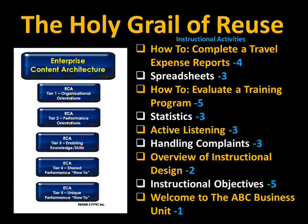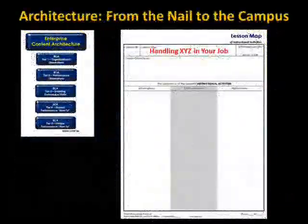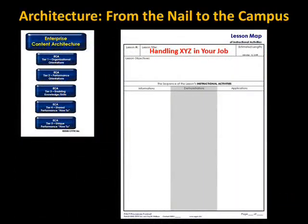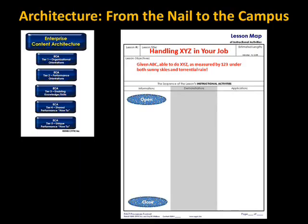How that would play out in the lesson map for handling XYZ in your job — with learning objectives given ABC, you're able to do XYZ as measured by 123 under both sunny skies and torrential rain conditions. There would always be an open and close, where the open is an advanced organizer that demystifies and lays out how we're going to get through this particular lesson. What's the point? How does this connect to the things previous? How does this connect to things downstream in the learning?